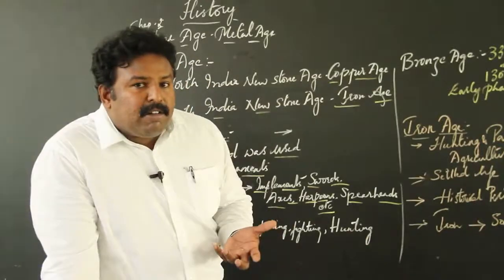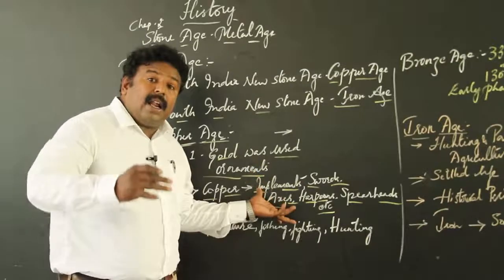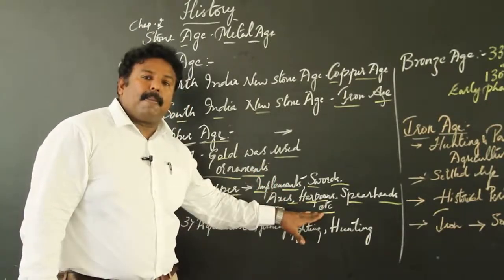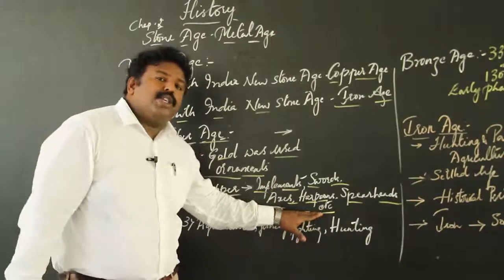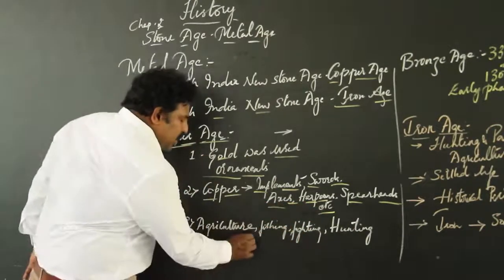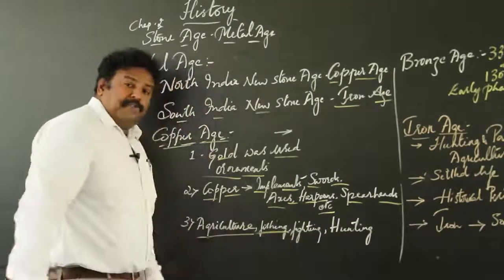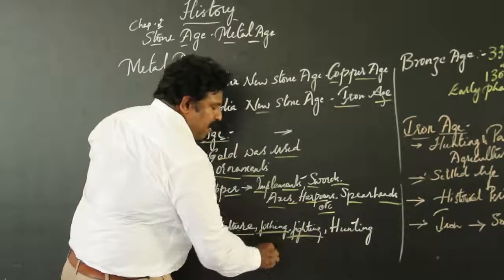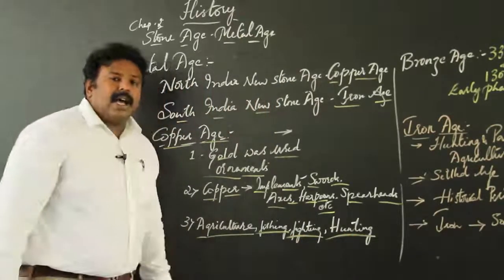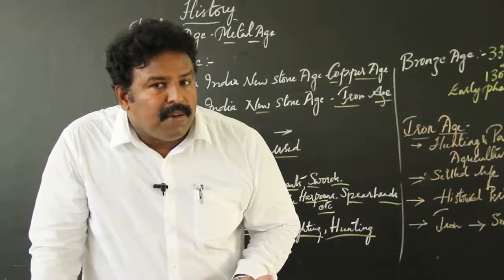These primitive people started using copper on a large scale, and that's the reason why it was considered the copper age. Not only was this usage restricted to weapons, but it was also used for the purpose of agriculture, fishing, fighting and hunting. So these were the uses of copper.